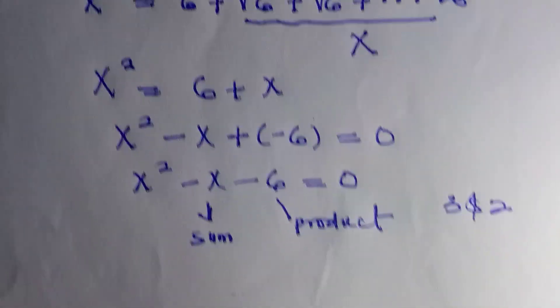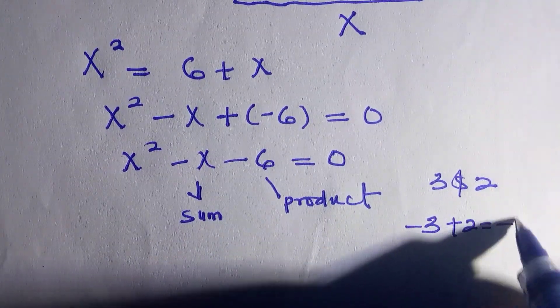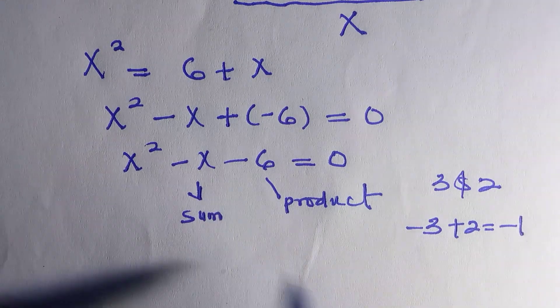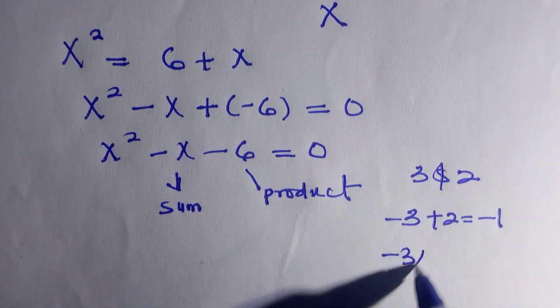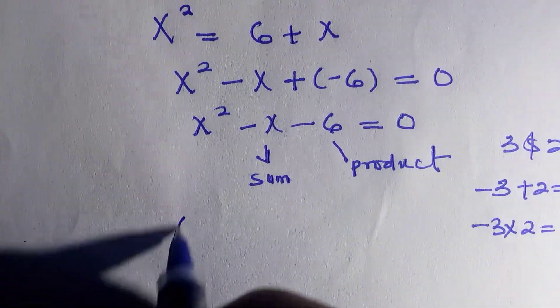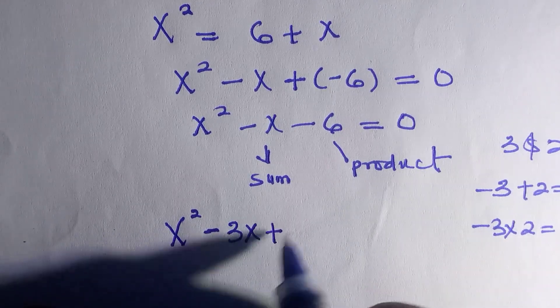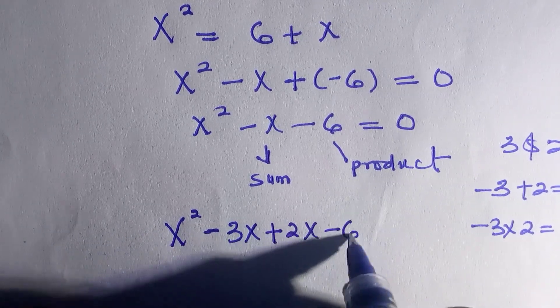Accordingly we place the symbols: we have minus two plus minus three, that's negative one, and minus two times two is minus six. By putting it here with x we have x squared minus three x plus two x minus six equals zero.